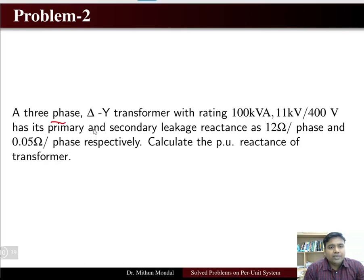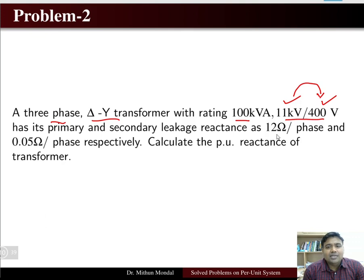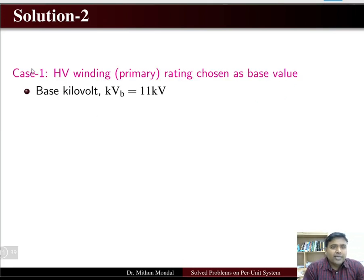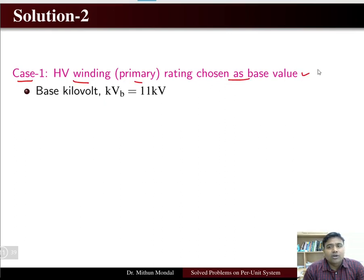Problem number two: a three-phase delta-star transformer rated 100 kVA, 11 kV / 400 V. Its primary and secondary leakage reactances are 12 ohm per phase and 0.05 ohm per phase respectively. Calculate the per unit reactance of the transformer. We will take two cases: Case 1 uses the high voltage winding rating as the base value, and Case 2 uses the low voltage winding rating as the base value.